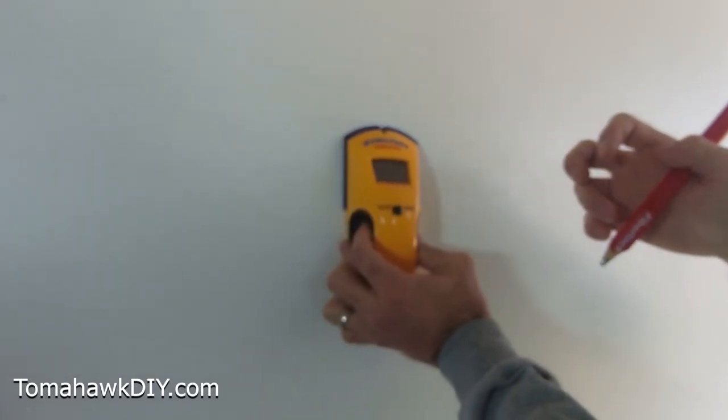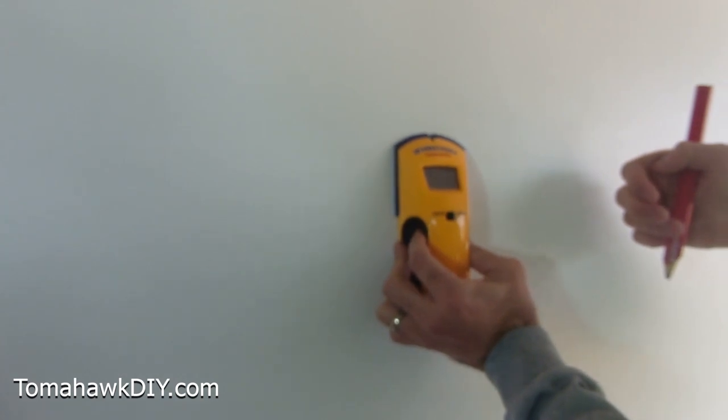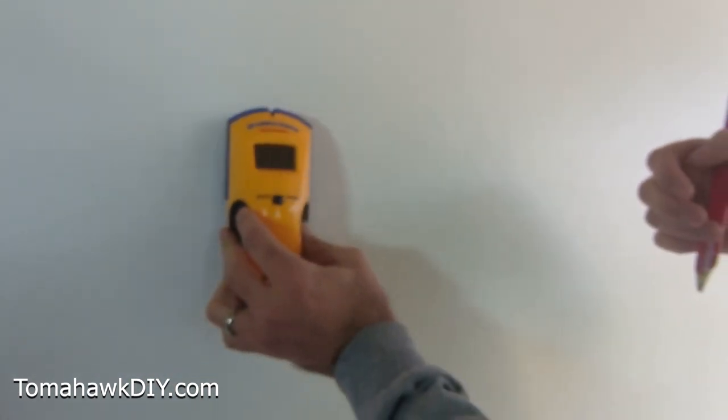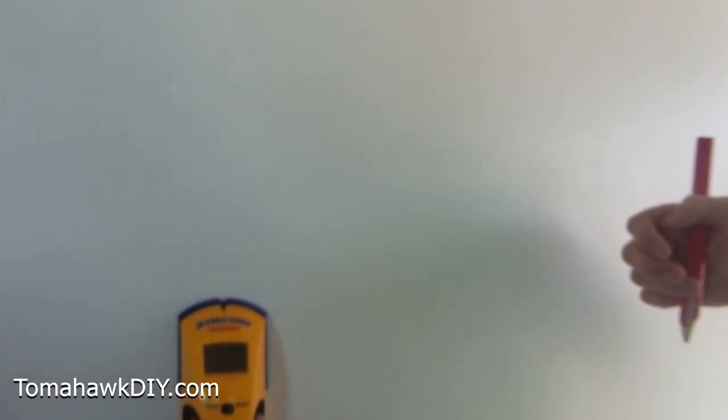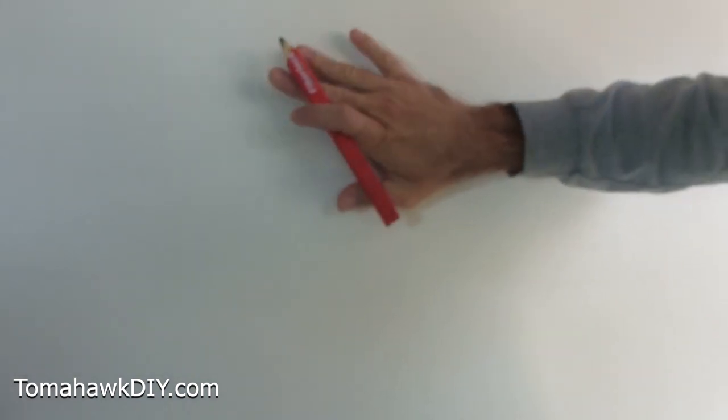I will typically like to do it several times, because if you happen to start your stud finder on a stud, it's not going to work at all. It's not going to show anything. I'll usually start my stud finder in several different spots and come across until I get multiple readings in the same area.